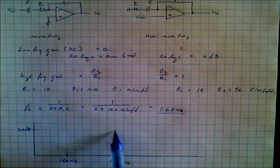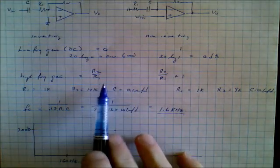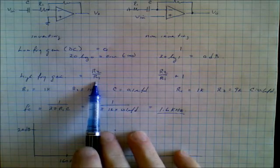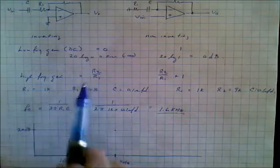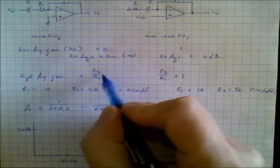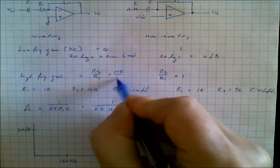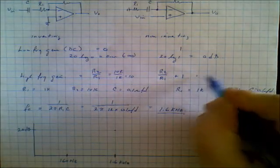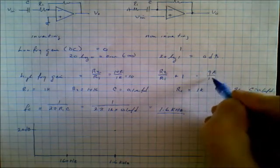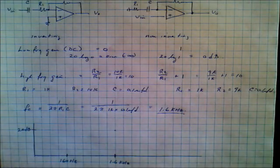Well, clearly the high frequency gain for both of these circuits is going to be the same. Because this one over here is going to be a gain of R2 which is 10k over 1k is equal to 10. And the gain over here is going to be 9k over 1k plus 1 is equal to 10 or 20 dB.